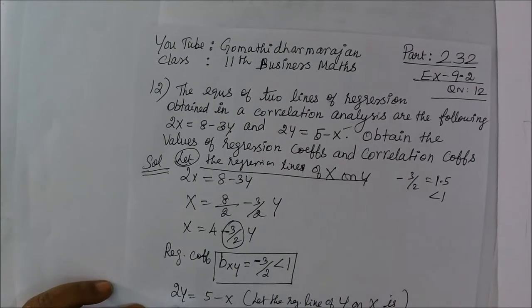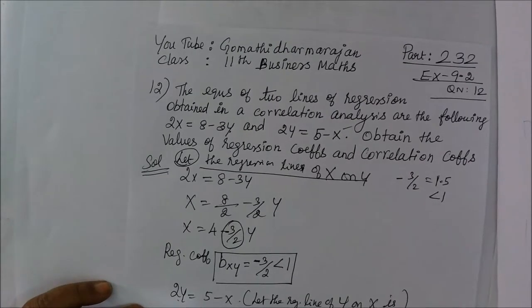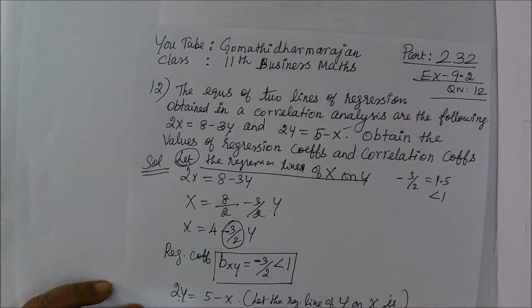Now y is equal to 5 by 2 minus x by 2. This is less than 1.